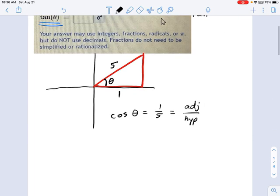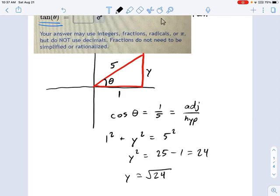Now, to do that, we use Pythagorean's theorem, which is that 1 squared plus y squared equals 5 squared. That means y squared equals 25 minus 1, which is 24. So we've got y equals the square root of 24. Say bye to the y, and replace it with square root of 24.